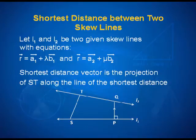We are looking at vector equations or Cartesian equations of two given lines. How do we find the shortest distance between these two skew lines? If we take points S and T with position vectors A1 and A2, and PQ is the shortest distance, then the projection of ST along the vector defining the line of shortest distance will give us the shortest distance. So the projection of ST is what we need, and for that we first determine the vector PQ.